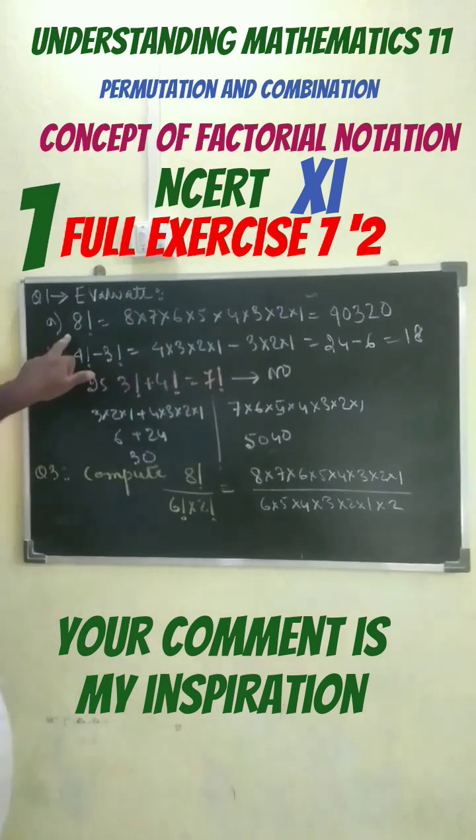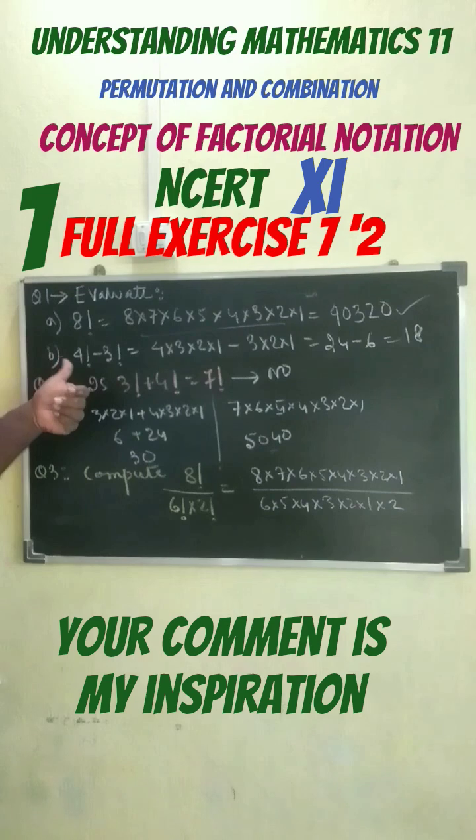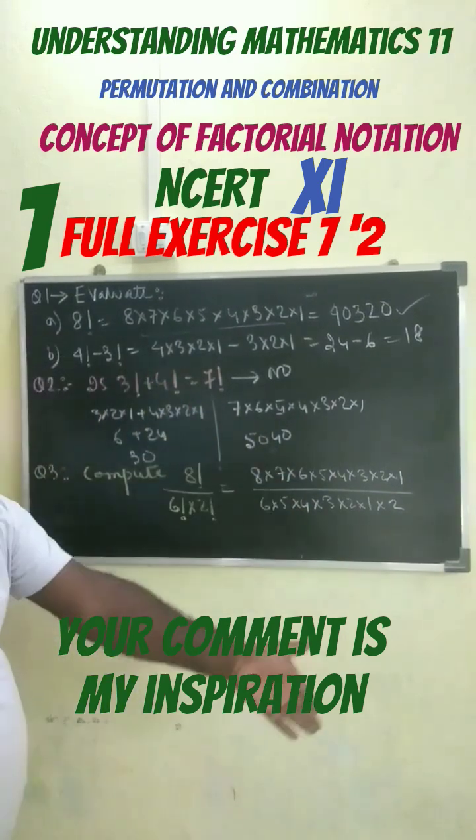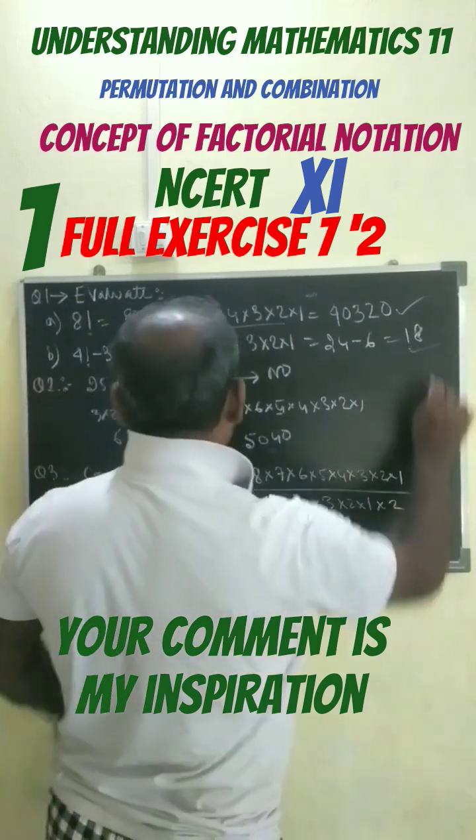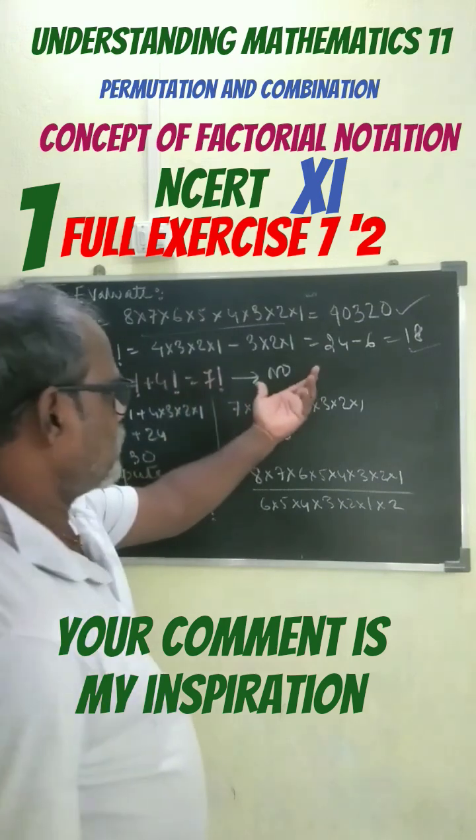The first question is 8 factorial, which can be written in expanded form. Next, factorial 4 plus factorial 3. As I mentioned, this can be written in this format. Next question: does factorial 3 plus factorial 4 equal factorial 7? The answer is no.